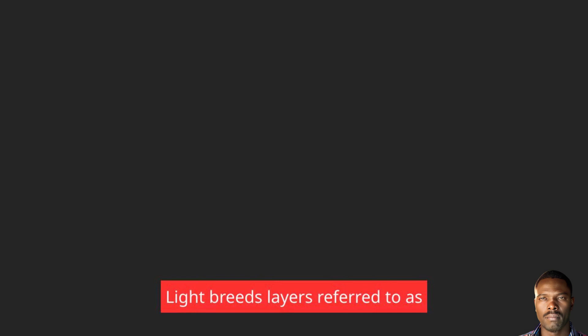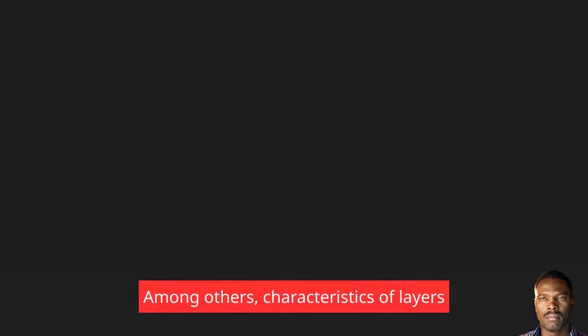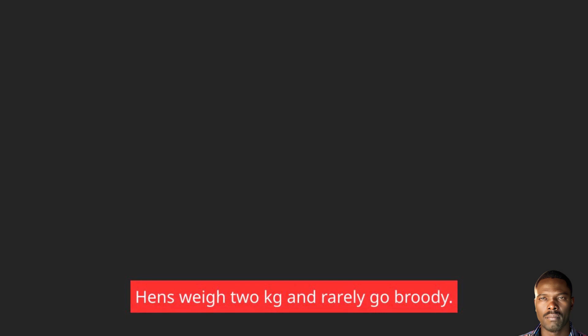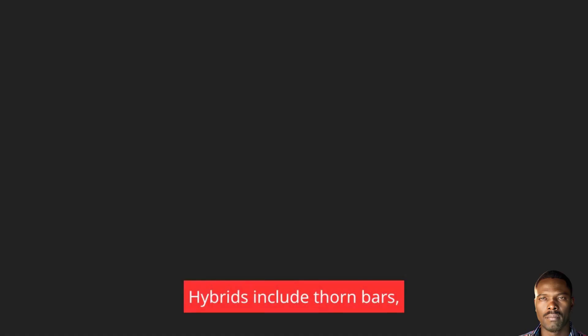Light breeds, referred to as layers: layer breeds purposely kept for egg production. Breeds of layers include Leghorns, Ancona, Minorca, and Exchequer, among others. Characteristics of layers: can lay up to 220 eggs per year, light body with red and waxy combs, active and exhibits a high degree of cannibalism, hens weigh 2 kg and rarely go broody. Examples of hybrid light breeds include White Leghorn hybrids: Thornber 404, Highline stock, Thornber 704, Shavers, and brown eggers, among others.